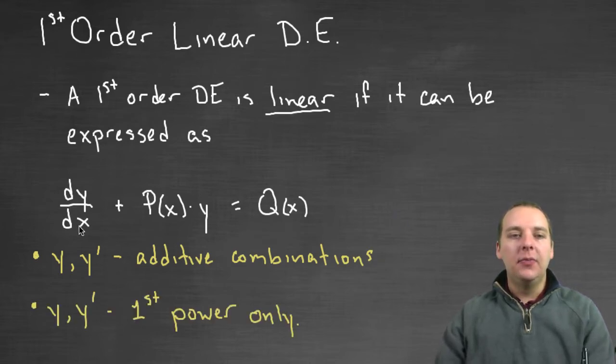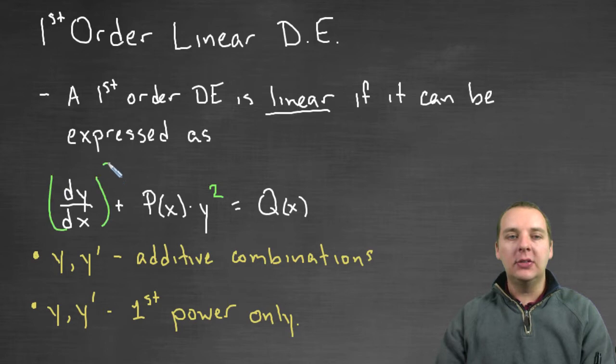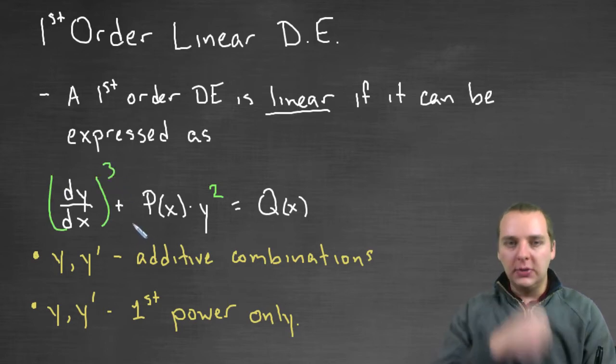The second thing is notice how the first derivative and the dependent variable y only have first powers. You could not have anything like a y squared or like a dy/dx cubed. Those would not be deemed linear.